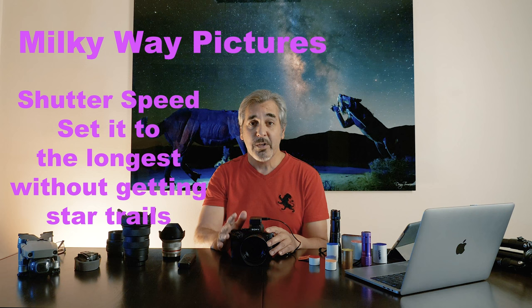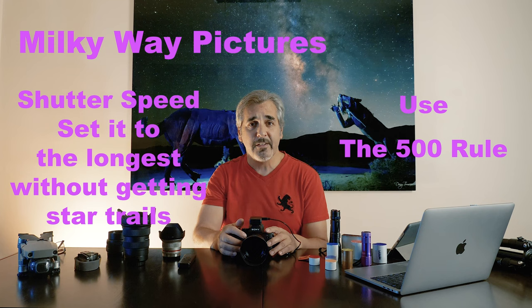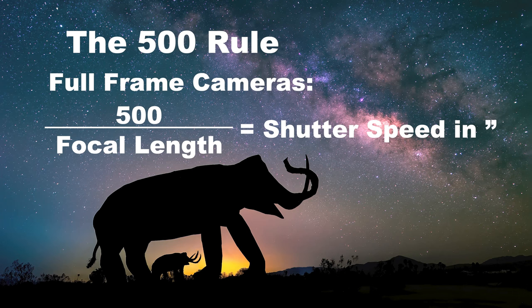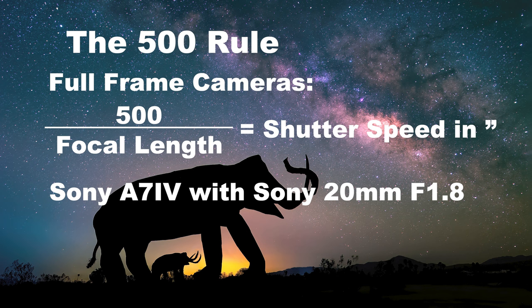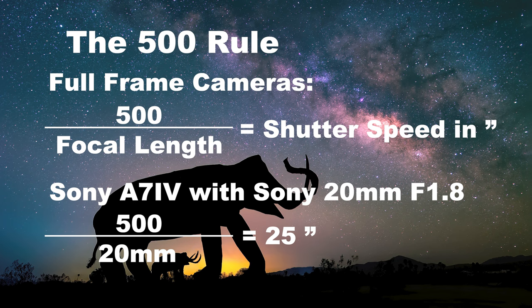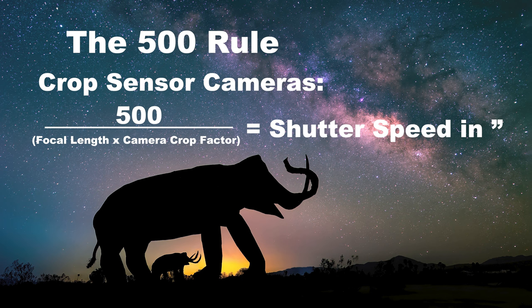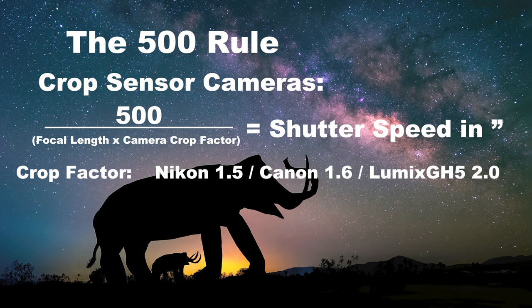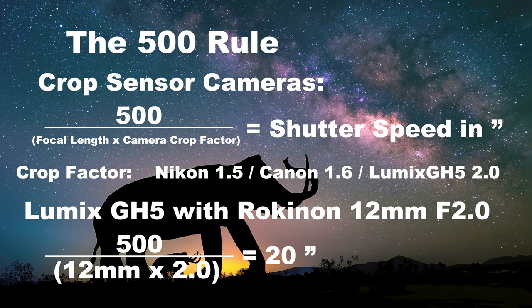To set your shutter speed as long as possible without getting star trails, there are a couple of rules: the 500 Rule and the NPF Rule. The 500 Rule for full frame cameras is 500 divided by the focal length, giving you the maximum shutter speed in seconds. For my Sony A7 IV with the 20mm f1.8 lens, that's approximately 25 seconds. For crop sensor cameras it is 500 divided by the focal length times the crop factor — Nikon is 1.5, Canon is 1.6, and for my Lumix GH5 the crop factor is 2.0, giving around 20 seconds with the Rokinon 12mm.